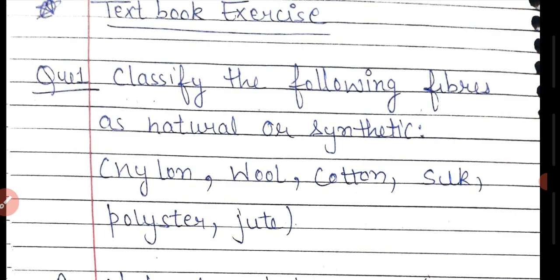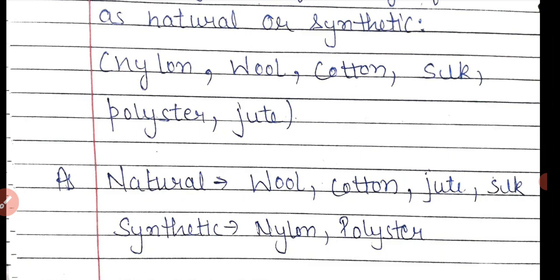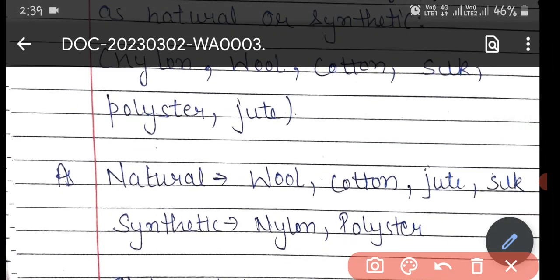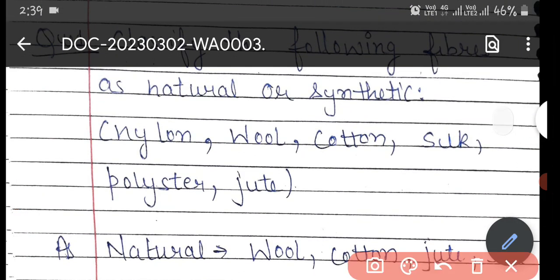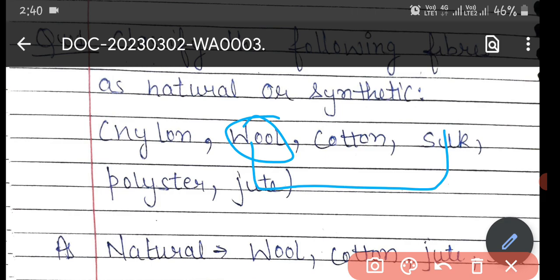The first question asks us to classify the following fibers as natural or synthetic: nylon, wool, cotton, silk, polyester, and jute. We need to identify which are plant-based, animal-based, or synthetic. Natural fibers include wool, cotton, silk, and jute. Cotton and jute are plant-based fibers, while wool and silk are animal-based fibers.